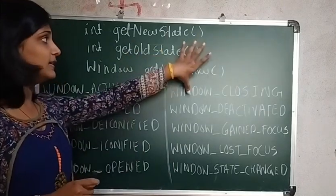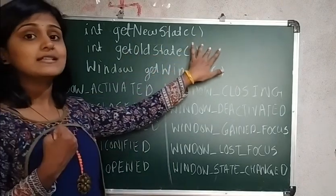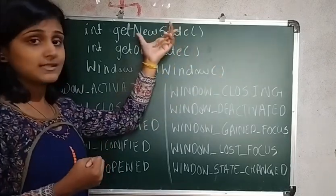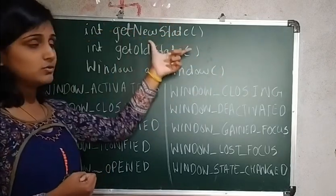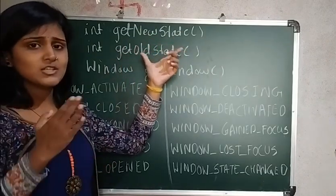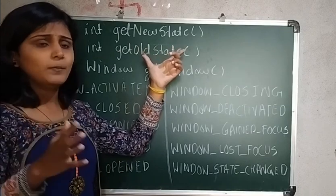Now regarding the methods - if you want to know what exactly is the state of a window or the new state, you can use the method int getNewState(). Or if you wanted to know the previous state, whether it is minimized, closed, or open, you can use the getOldState() method.